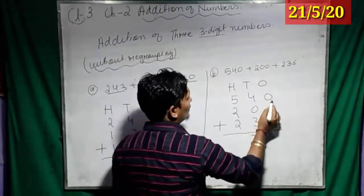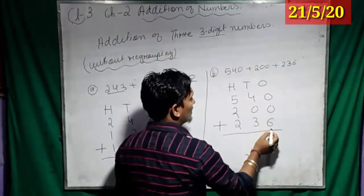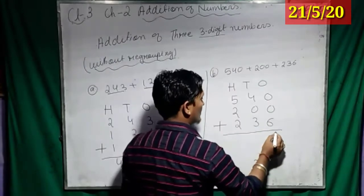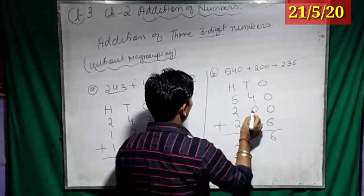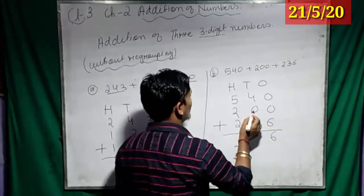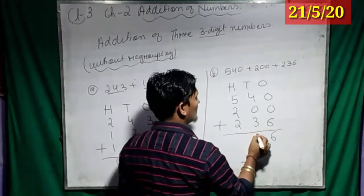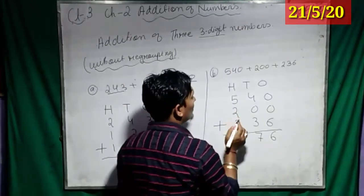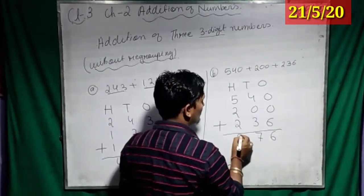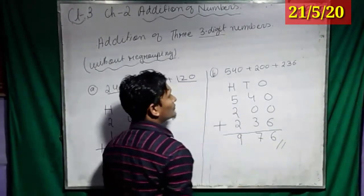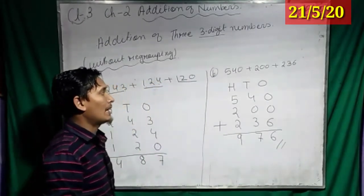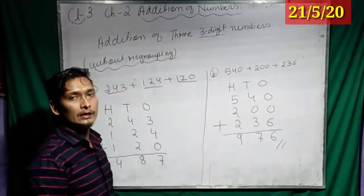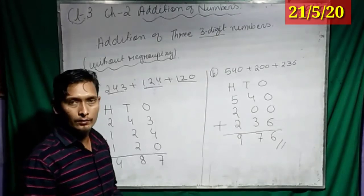So, 0 plus 0 plus 6 is how much? Yes, 6. And 4 plus 0 is how much? 0 or 4? Yes, 4. 4 plus 3? 7. Then, 5 plus 2 is 7. 7 plus 2? Yes, 9.